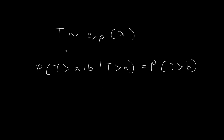In this video, we're going to prove the memoryless property of the exponential distribution. So let's say T follows the exponential distribution with parameter lambda. We're going to prove the memoryless property, which is just this statement below. What this means is that you can think of T as waiting time — for example, the number of seconds we need to wait before we get our next phone call. The memoryless property states that if we wait for more than a seconds, the probability that we need to wait for an extra b seconds is equal to the probability of just waiting more than b seconds right at the start. So having this past experience doesn't affect the probability, which is why it is called memoryless.